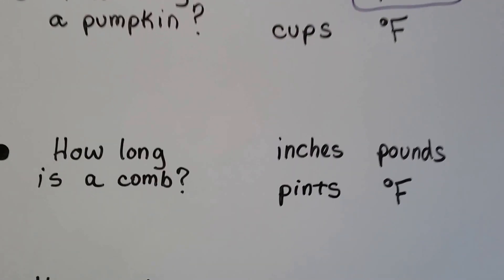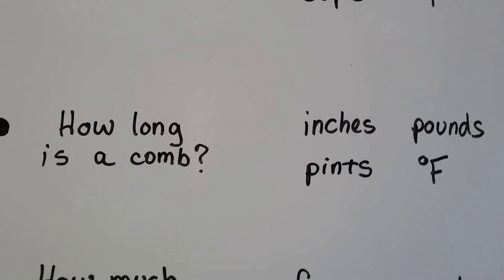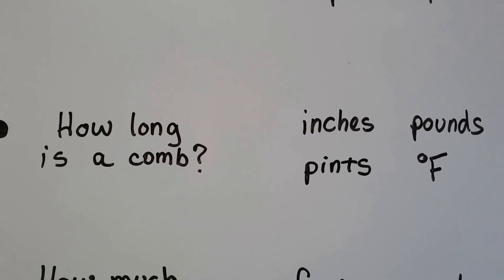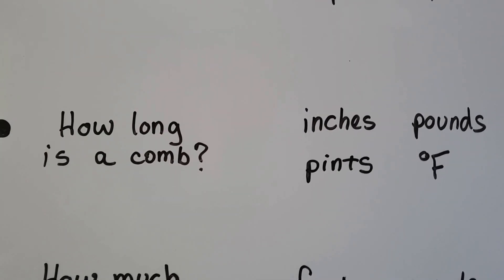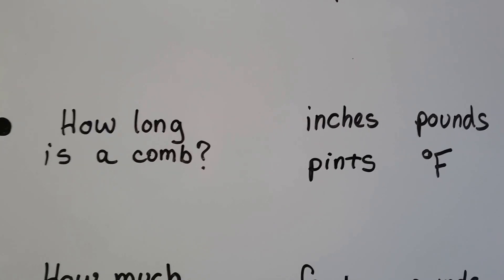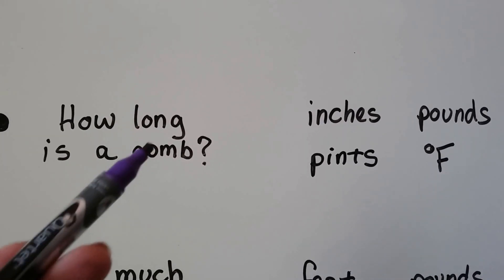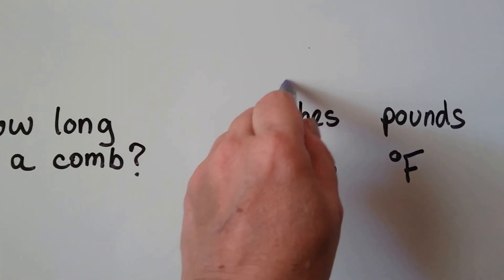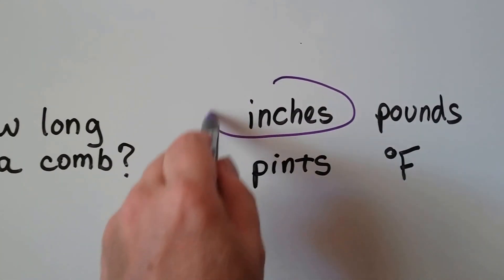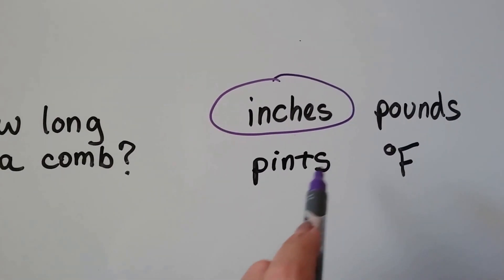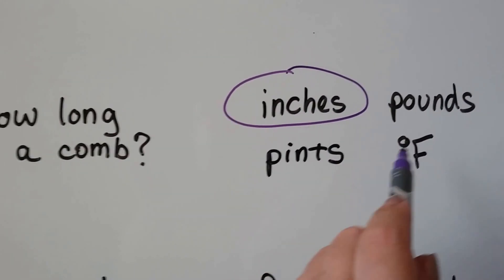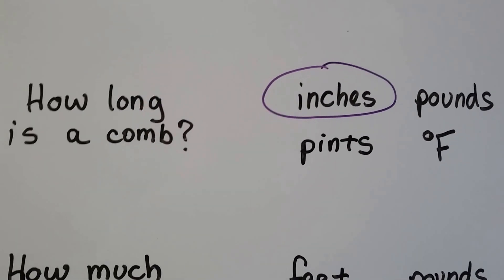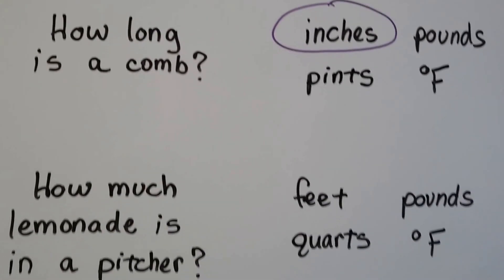How about this one? What if we wanted to find out which units we would use to find how long a comb is? Would we use inches, pounds, pints, or degrees Fahrenheit? How long means its length, and we could use inches. Pounds would tell us how heavy it is, pints would tell us liquid volume, and degrees Fahrenheit would tell us hot or cold. So inches would be the right answer.